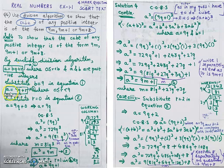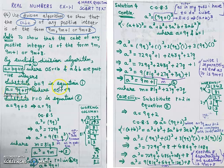A common doubt here is: why are we not substituting the value of r? That is because we have three cases. In the three cases the remainders are 0, 1, and 8 respectively — that is why the remainders take different values. We are only substituting the divisor b = 9, which is the same in all three cases. The condition is 0 ≤ r < 9.